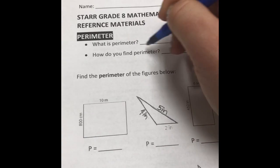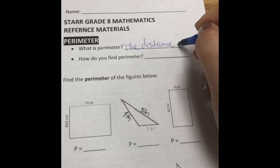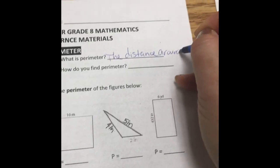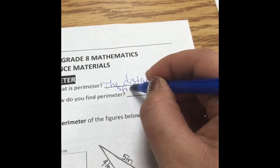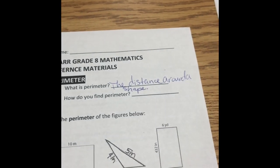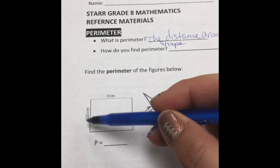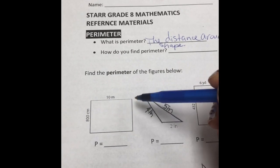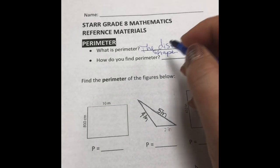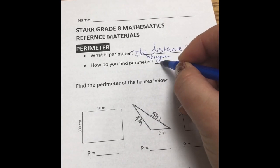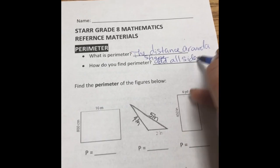Perimeter, what is it? It is the distance around a shape. I like to picture a little tiny person that walks around the whole shape, and that is the perimeter. It doesn't matter what the shape is, as long as they are straight sides. In order to find it is you add all sides.